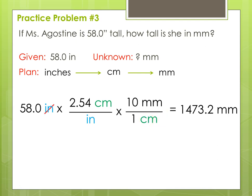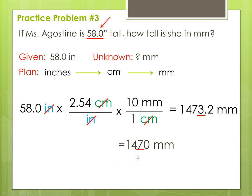Now it's a good idea to check our units to make sure they cancel. Inches divided by inches goes away; centimeters divided by centimeters goes away. We can look at how many significant figures were in our measurement — there were three. The trailing zero is significant because the number contains a decimal point. Then we start counting from the left in our calculated answer, and the third significant digit is the 7. The number immediately following it is a 3. The rule says 4 and below, you let it go. So our answer will be 1470 millimeters — the third significant digit is the 7. There's no decimal point, so the trailing zero is not significant.